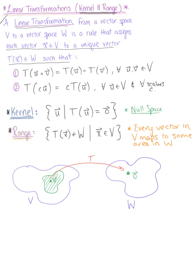When we think about the range graphically, the range tells us that every vector in vector space V maps to some area in W. Every vector in vector space V is being mapped by the transformation to some area or region within W.